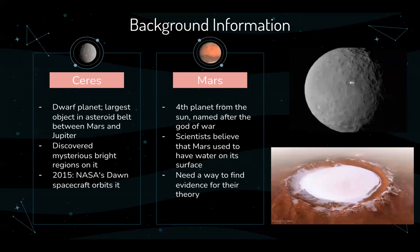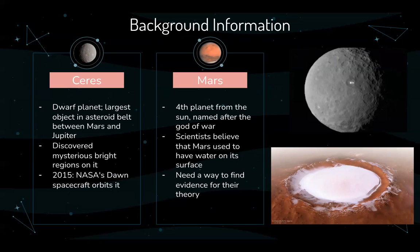Some background information. Ceres is a dwarf planet — the largest object in the asteroid belt between Mars and Jupiter — and scientists discovered mysterious bright regions on it a while ago. In 2015, NASA sent the Dawn spacecraft to orbit it and investigate what's going on. Mars is the fourth planet from the Sun, named after the God of War, and it's known for being red. Scientists believe that Mars used to have water on its surface, but they need to find a way to evidence their theory with solid evidence.